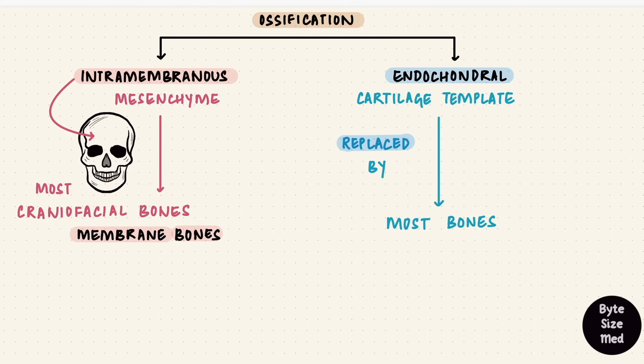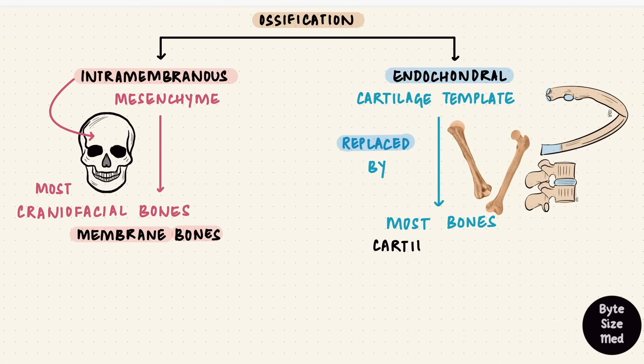This is how most bones in the body form, like the long bones, the humerus, the femur, vertebrae, ribs. They are cartilage bones. They form by endochondral ossification.